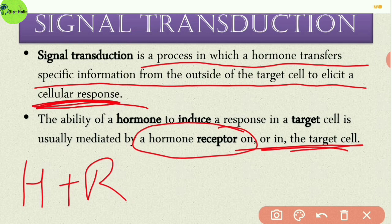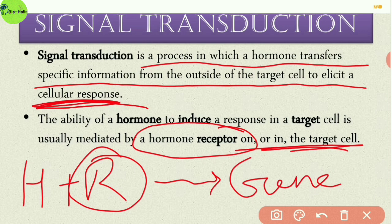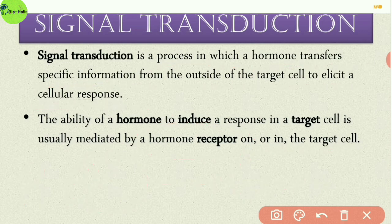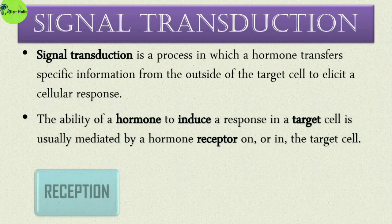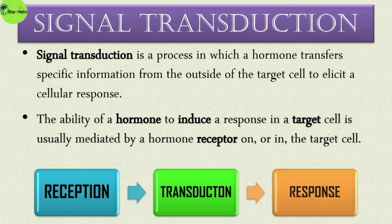After the binding of hormones with their receptors, the receptors get activated and then the signal is relayed by various protein activation and deactivation steps, ultimately causing alteration in gene expression. This gene expression ultimately causes physiological changes, and the signal is transduced from outside the target cell causing cellular responses. Signal transduction involves three steps: reception, transduction of the signals, and ultimately cellular response.